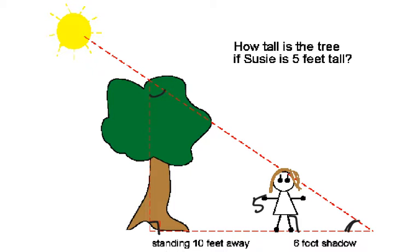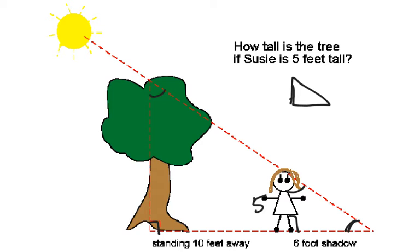So these are going to be similar figures. Again, not the same. So we have a 6-foot shadow for Susie. If it makes you more comfortable, you can redraw the triangles for Susie, and then another one for the tree, and label it.